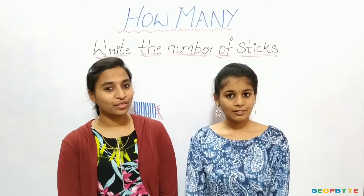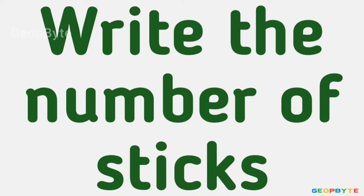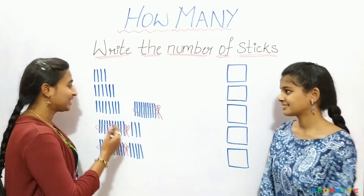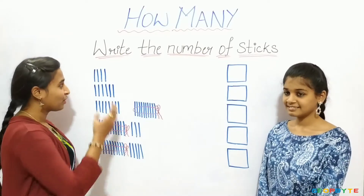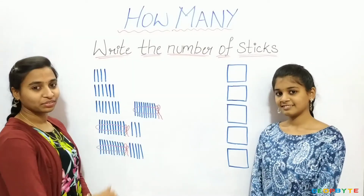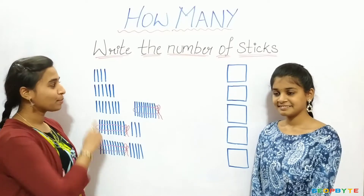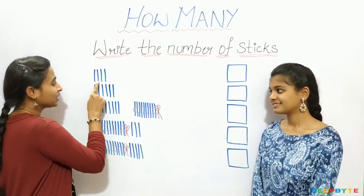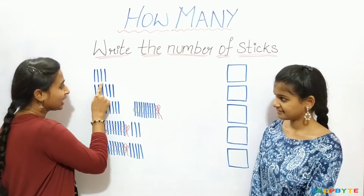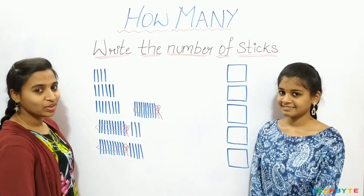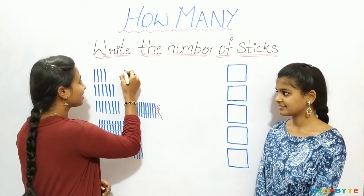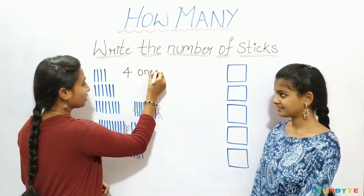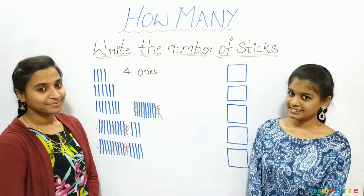Write the number of sticks. Hey kids, see here. We have a few sticks and a bundle of sticks. Let us see them one by one. One, two, three, four. Four sticks. That is four ones. Let us write four.